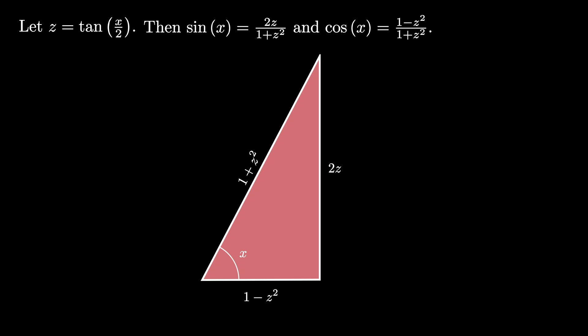Using the fact that z equals the tangent of x over 2, we have that x equals 2 times the arctangent of z. Differentiating this expression tells us that dx equals 2 divided by 1 plus z squared dz.